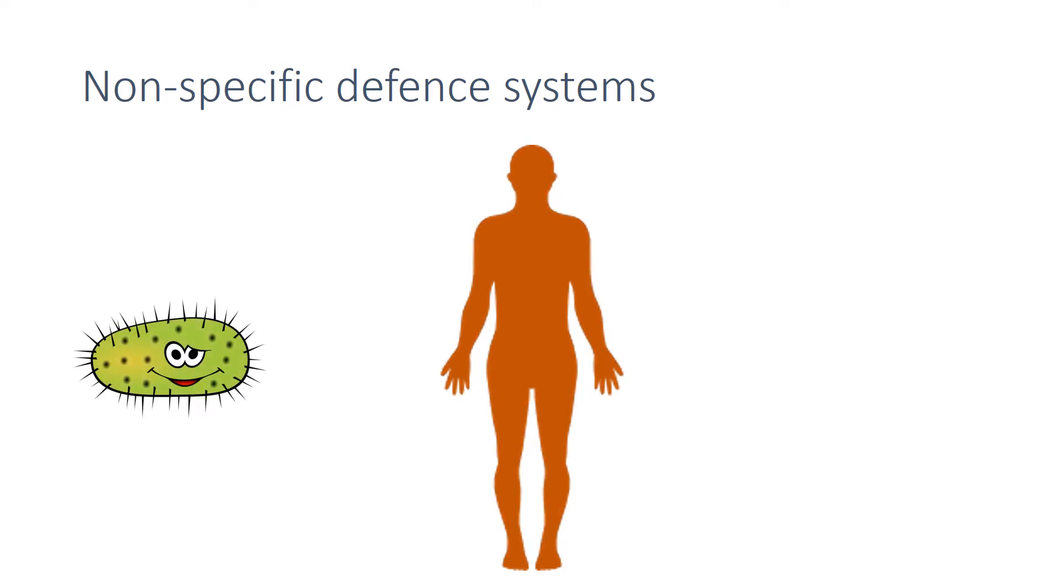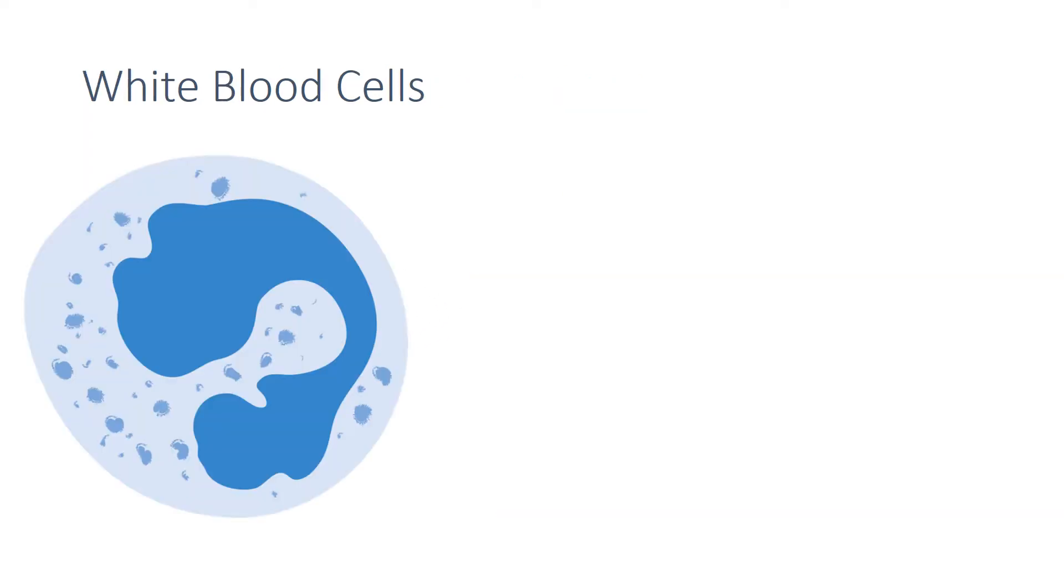If a pathogen does enter the body, then the immune system will try to destroy it. White blood cells are a major part of your body's specific defence system. They protect you in three ways: